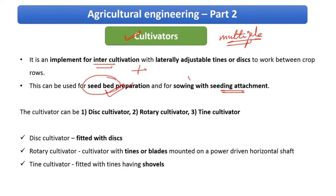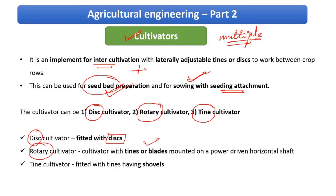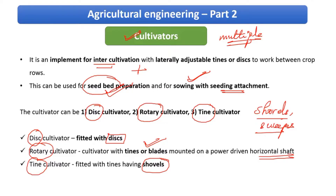There are different types of cultivators: disc cultivator, rotary cultivator, and tine cultivator. This classification is based upon the equipment attached. In a disc cultivator it is fitted with discs; in a rotary cultivator you have blades mounted on a horizontal shaft; a tine cultivator is fitted with tines having shovels. Shovels and sweeps are equipment attached to implements to till the land.